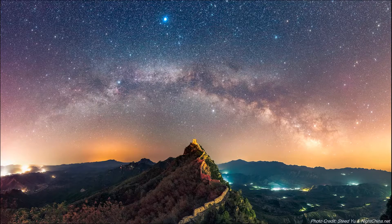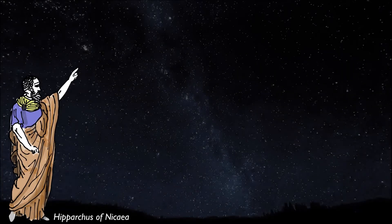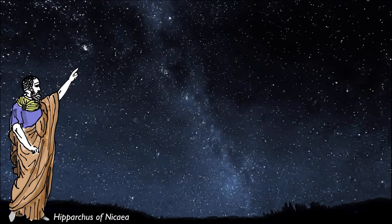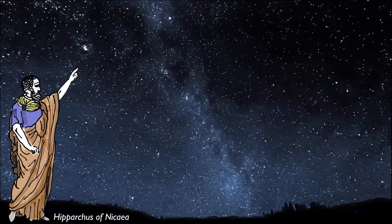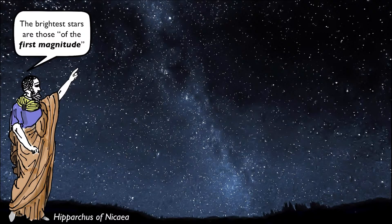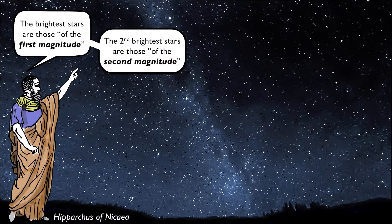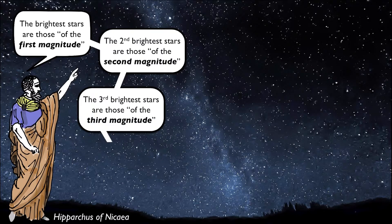It all began in 129 BCE with ancient Greek astronomer Hipparchus of Nicaea. He basically created a system of categorizing stars by simply stating the obvious. He called the brightest stars, which were the first to appear in the night sky after sunset, the stars of the first magnitude. The second brightest were those of the second magnitude, third brightest, third magnitude, and so on and so forth.